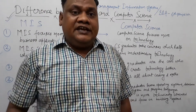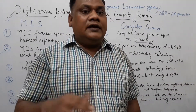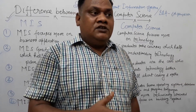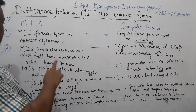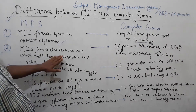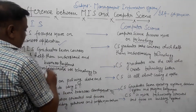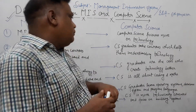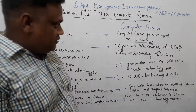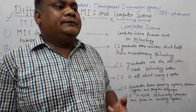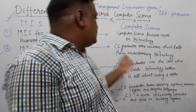It depends on your interest and what you want to do. If we talk about BBA and BCA, BCA students do courses which help them understand and solve business problems. CS graduates, like BCA students, take courses which help them understand technology — there are different areas such as website development, software engineering, network engineering, and other computer technology fields.